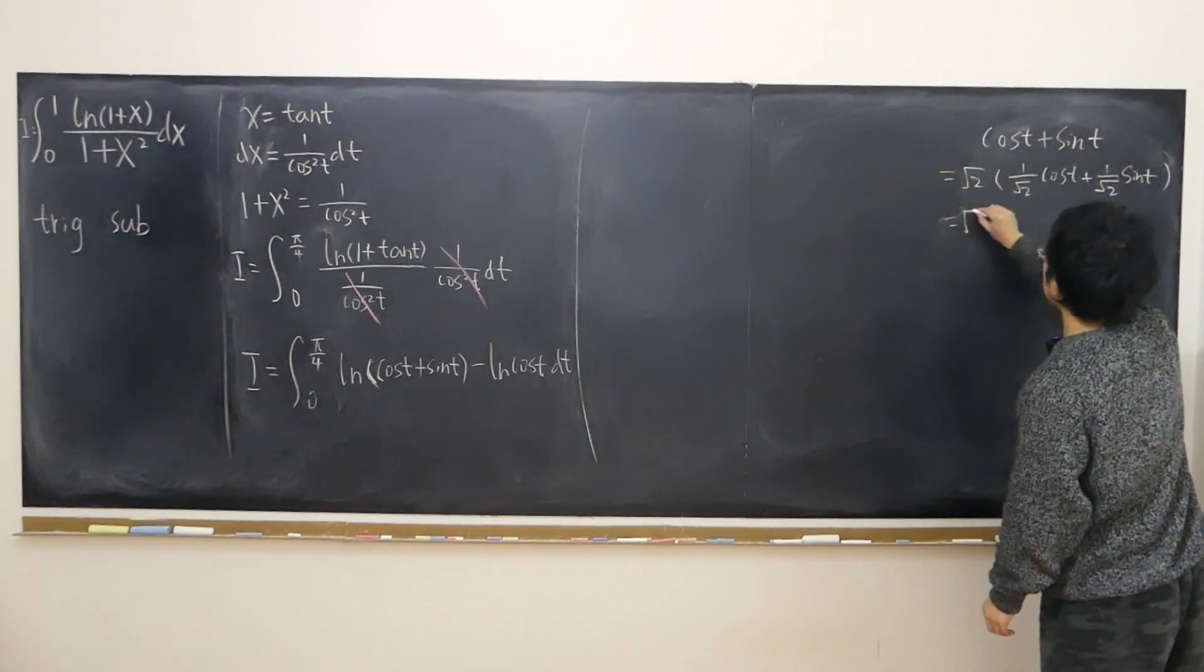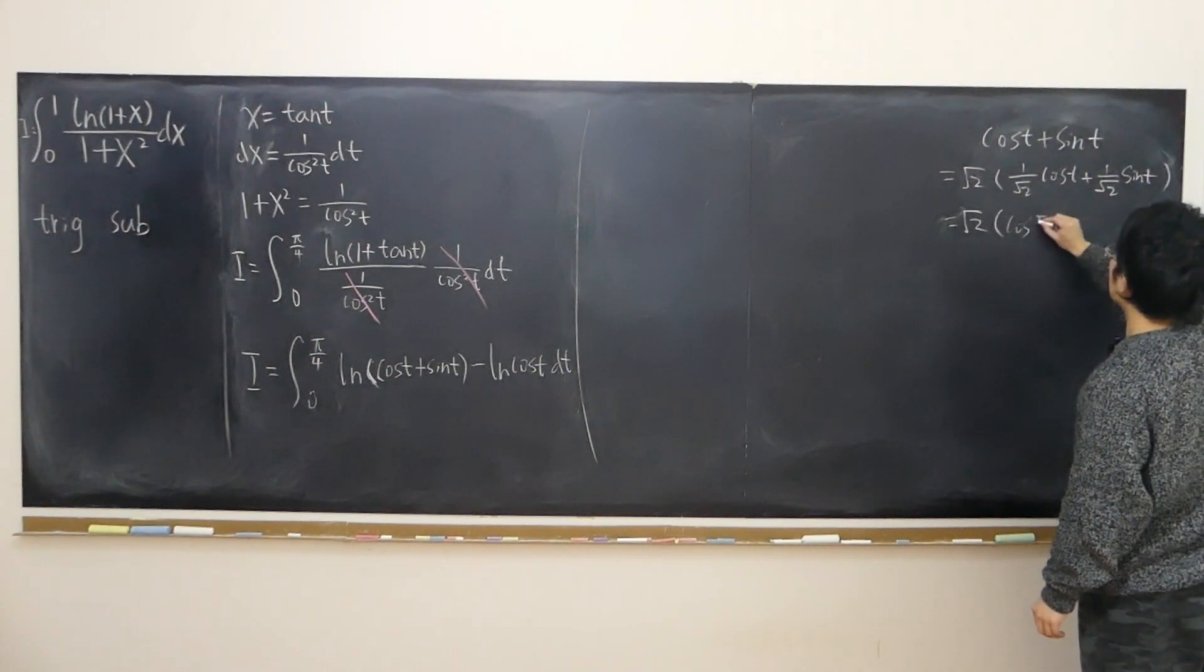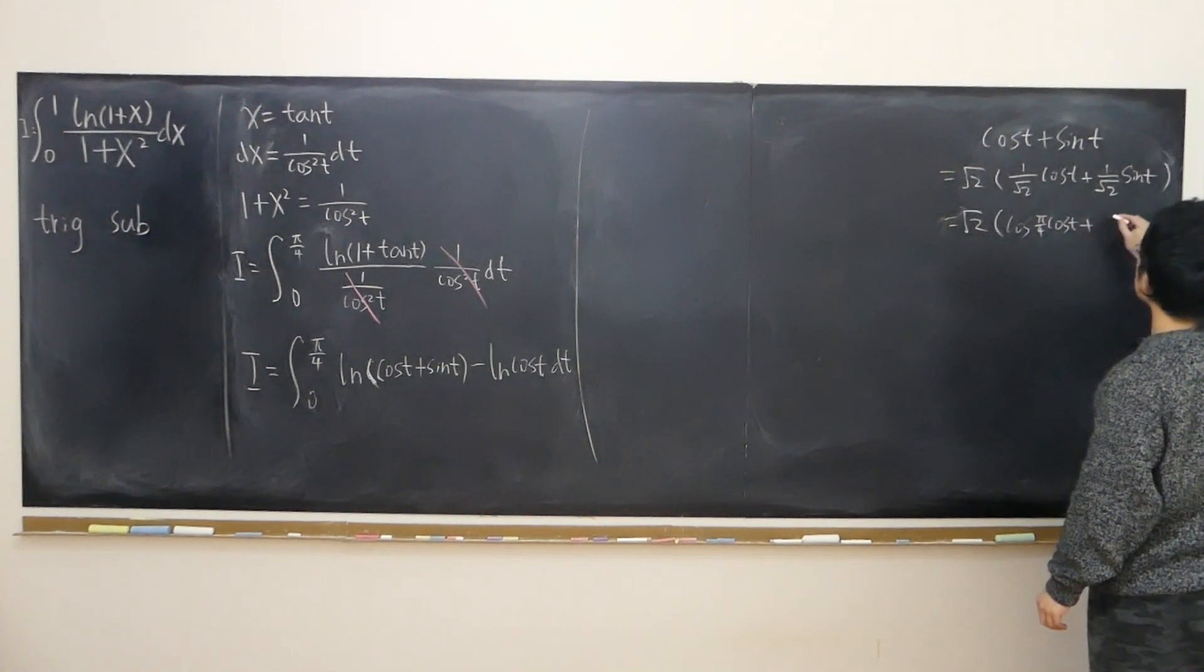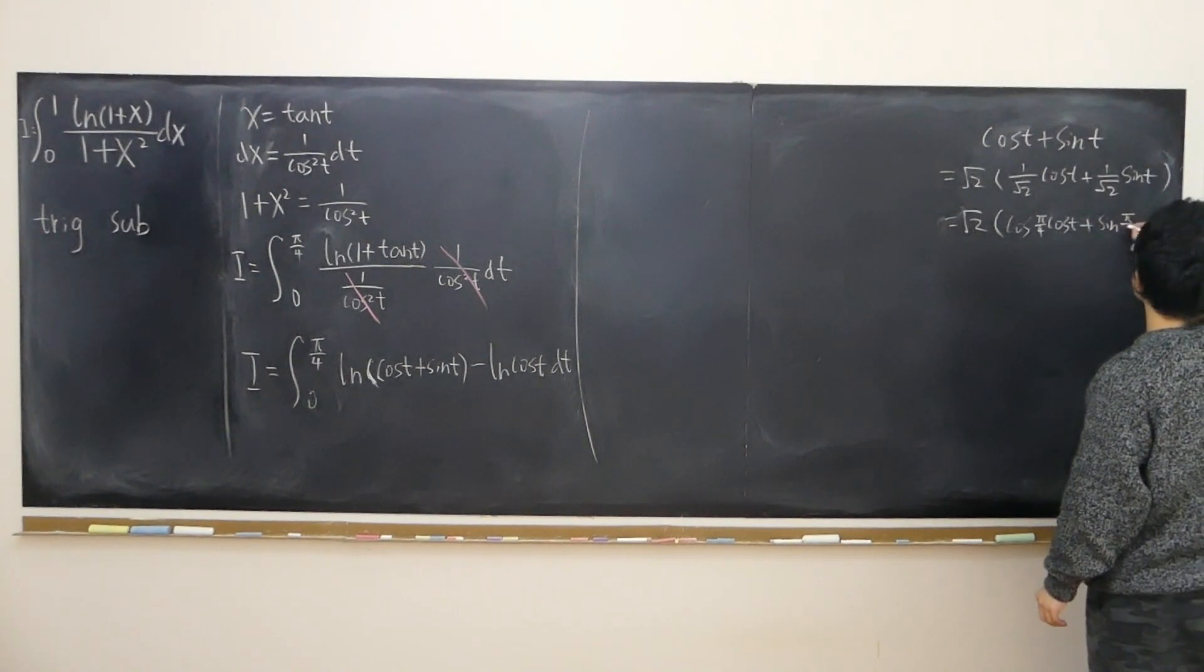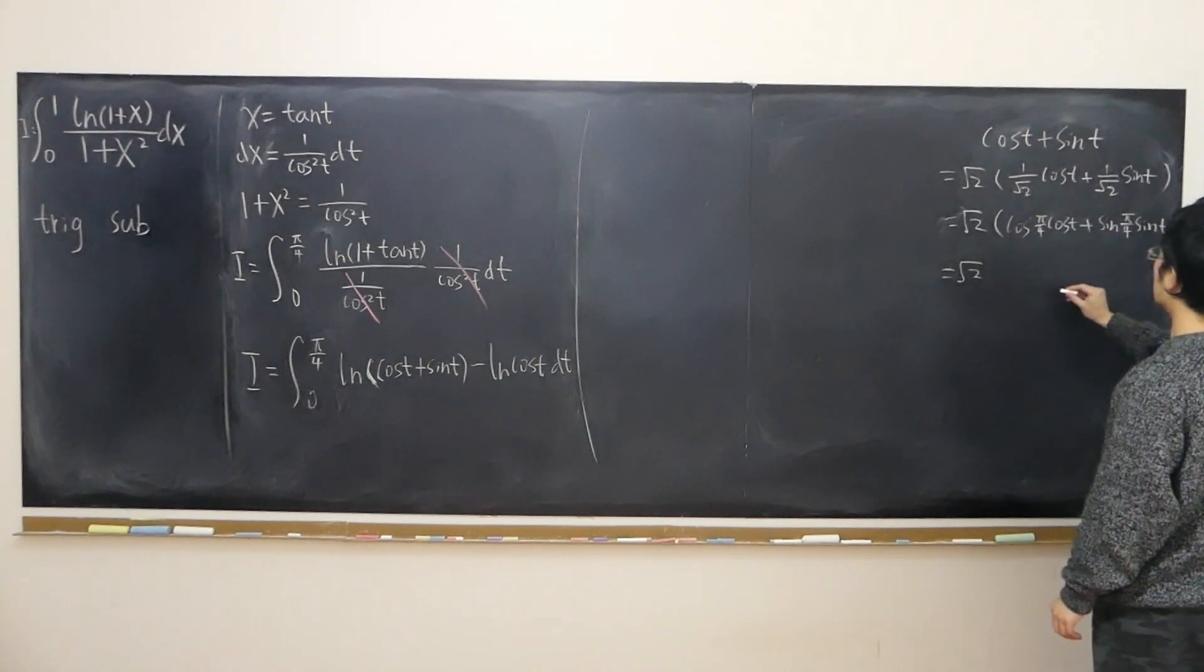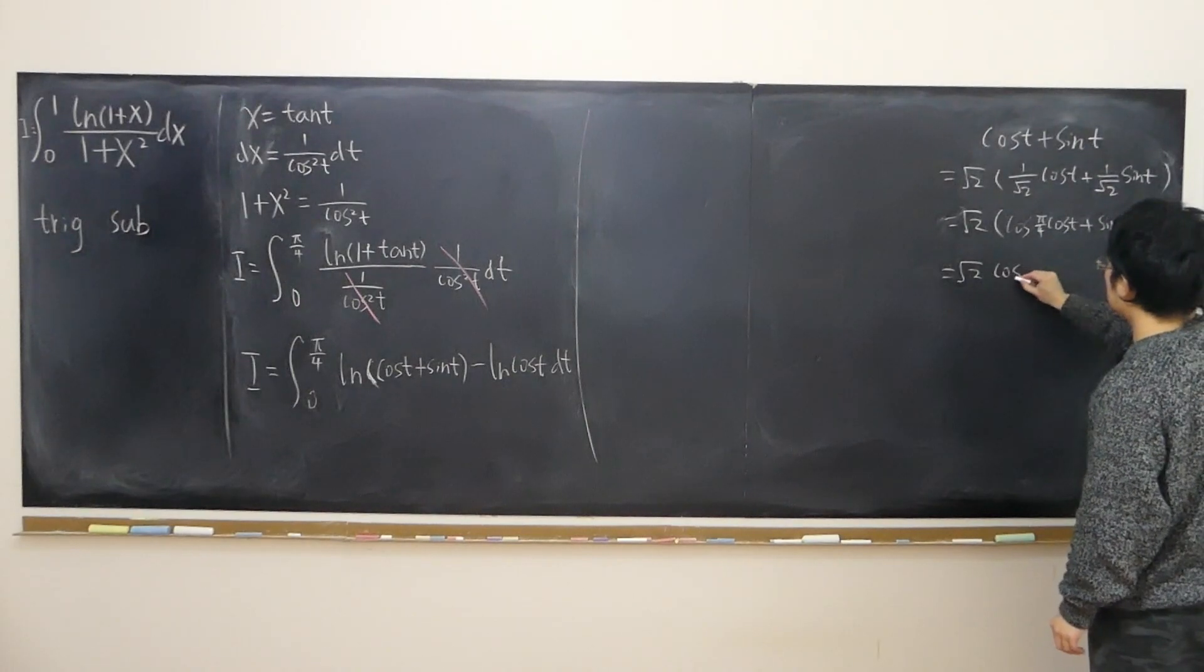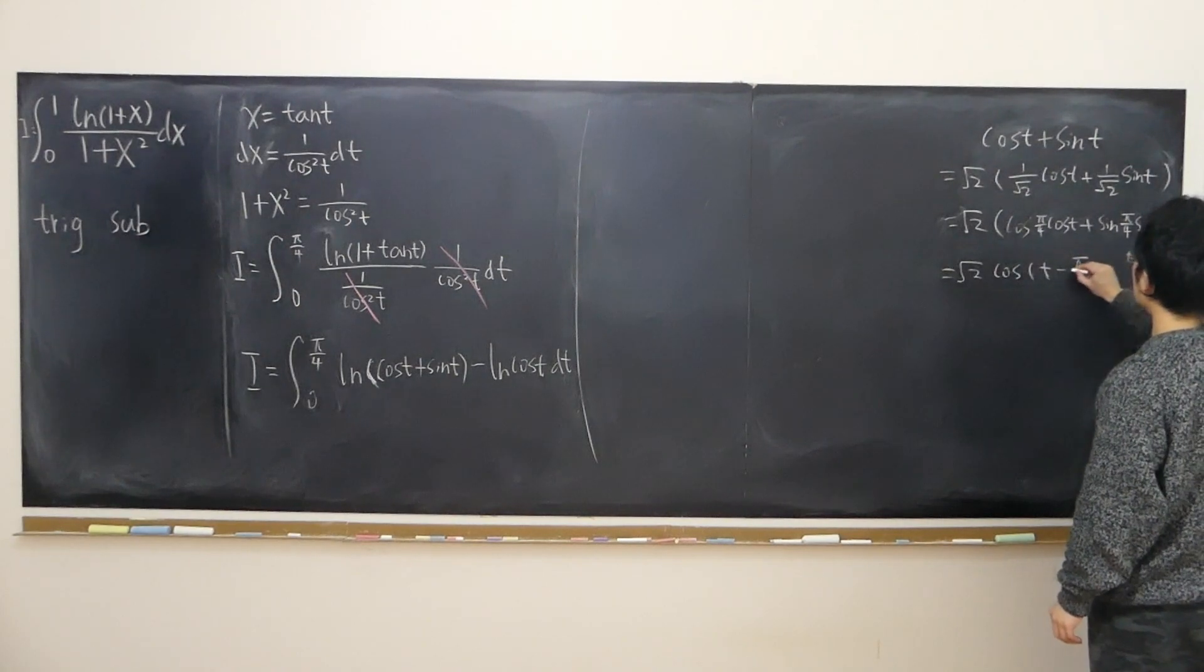Then that is equal to, 1 over square root of 2 is simply cosine of pi over 4, plus 1 over square root of 2 is sine of pi over 4. And then that is simply angle sum or angle difference, cos cos plus sine sine. That is cosine difference of t and pi over 4.